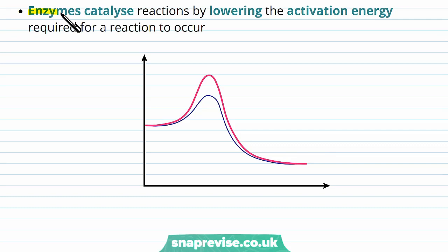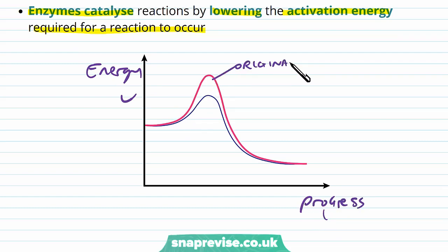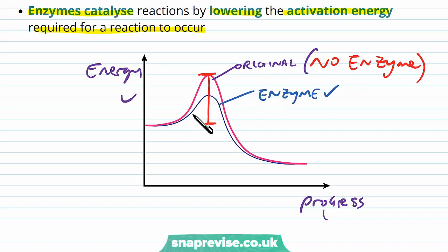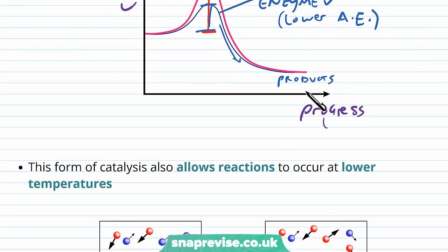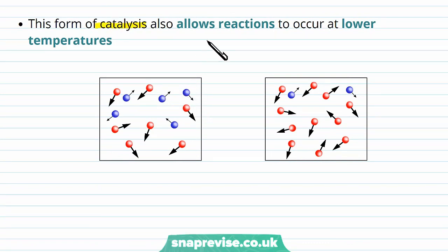Enzymes are catalysts that make reactions happen faster by lowering the activation energy required for a reaction to start. On the energy graph, the pink line shows the original high activation energy without an enzyme. When an enzyme is added, the activation energy only needs to go from a lower point, so more molecules in a given time have the right energy to collide and make products — more successful reactions per unit of time. This is what enzymes do: they bring activation energy down without increasing temperature and damaging our cells.